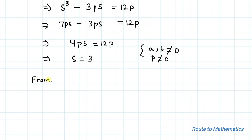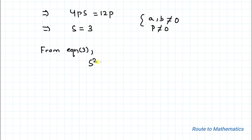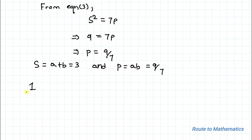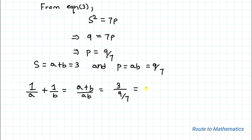From equation 3, s² = 7p. Substituting s = 3, we get 9 = 7p, so p = 9/7. We have s = a + b = 3 and p = ab = 9/7. We are asked to find 1/a + 1/b. Taking LCM, this equals (a + b)/(ab) = 3 ÷ (9/7) = 7/3. So our answer is 7/3.